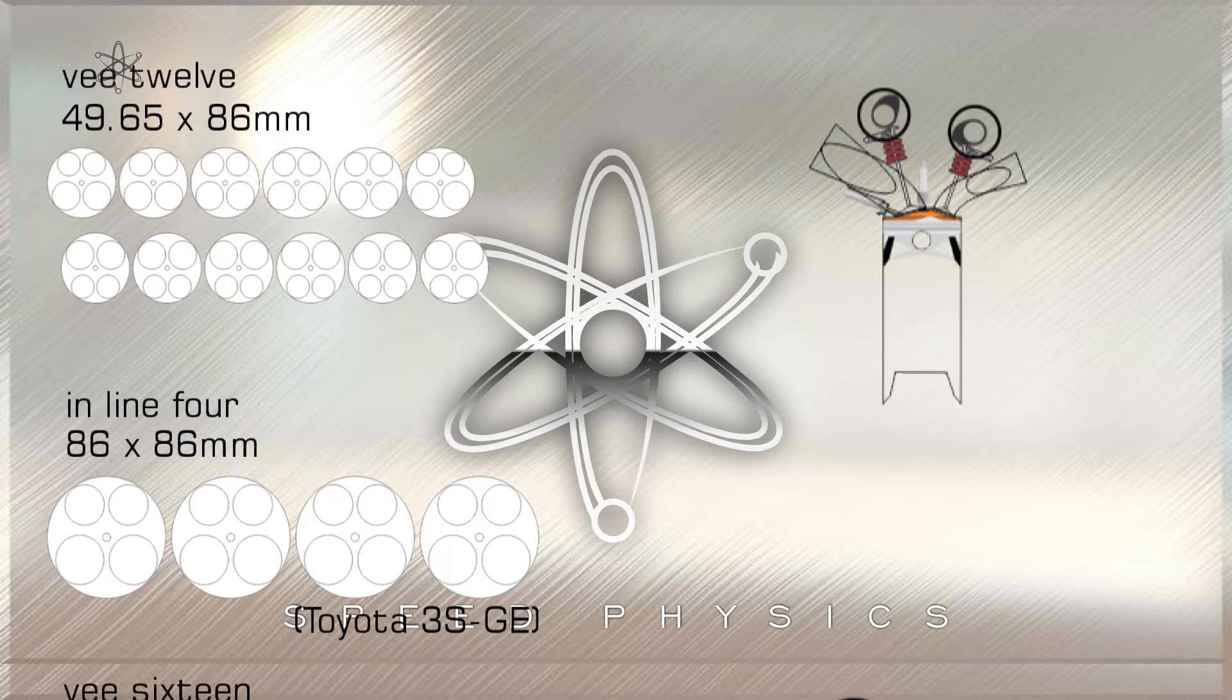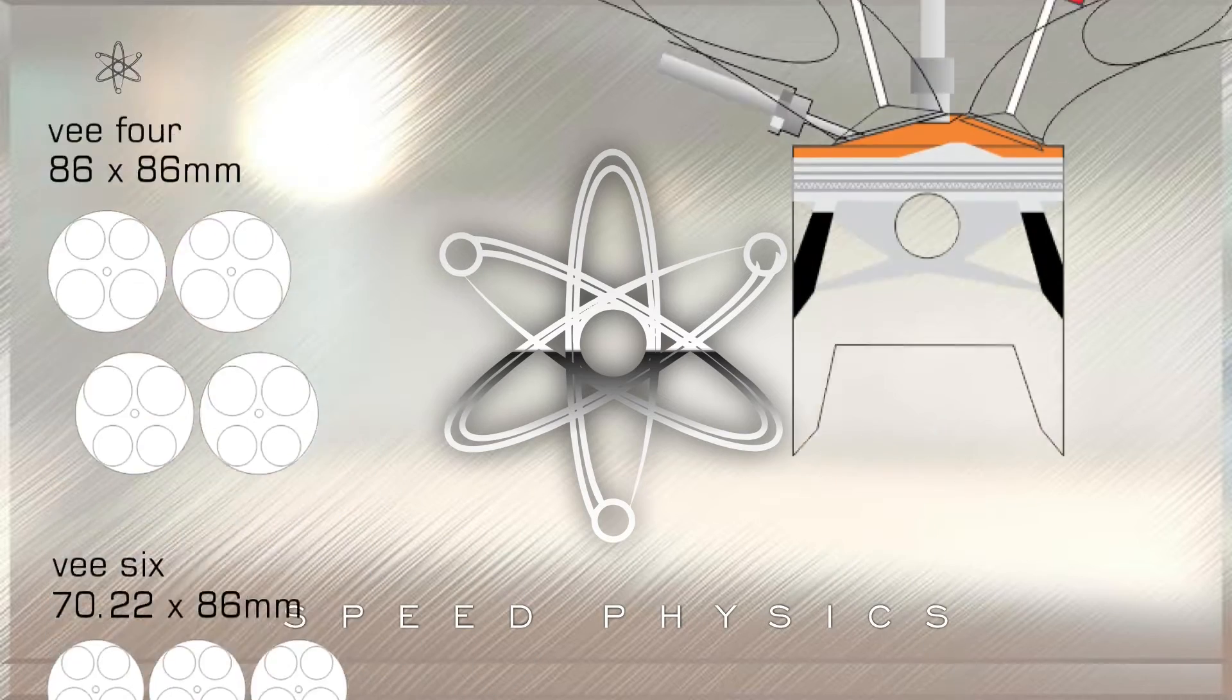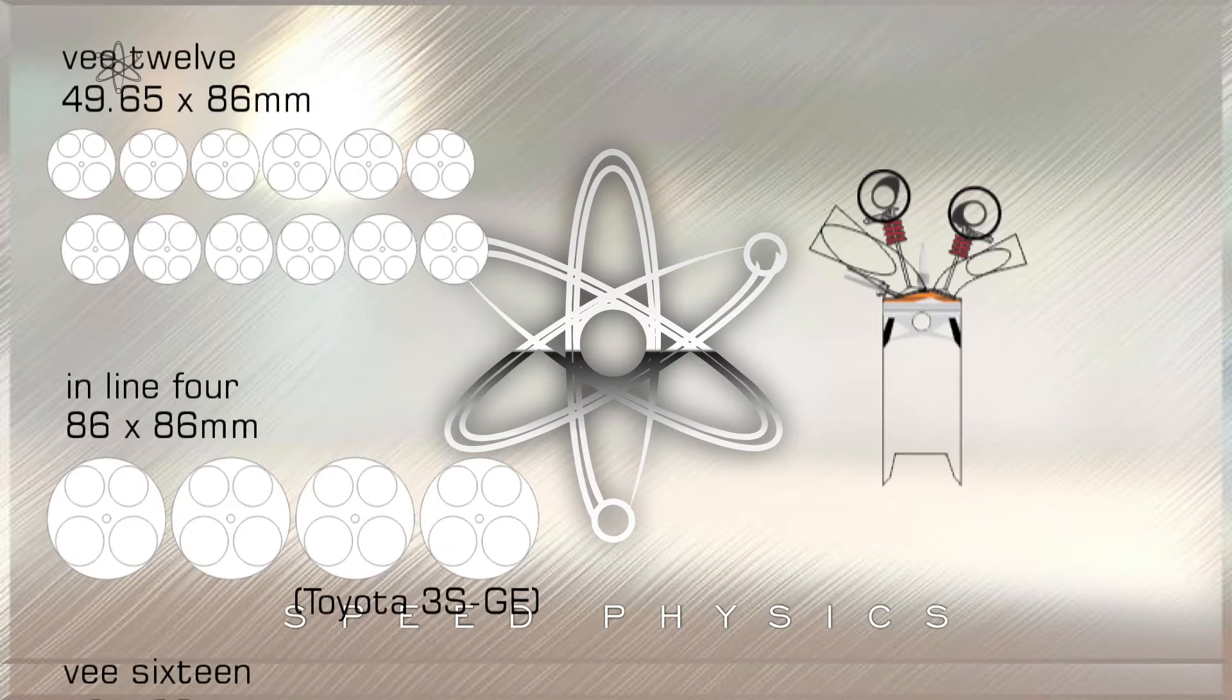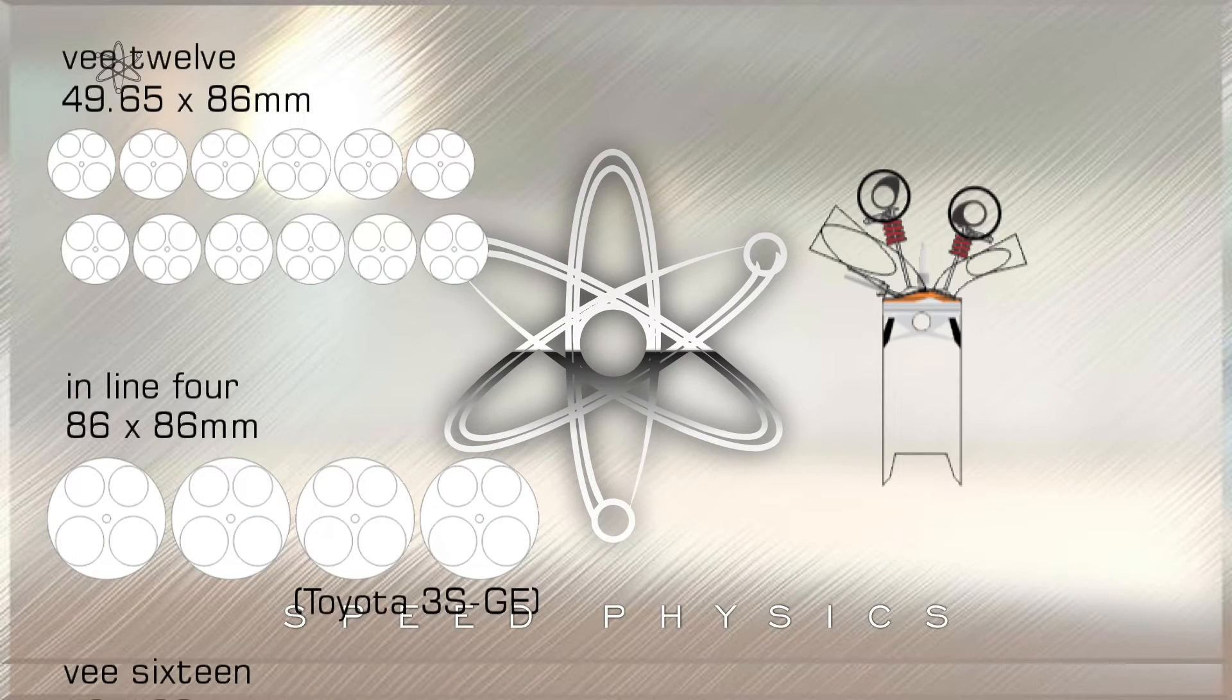Interestingly the bore stroke ratio would be exactly 2 to 1 for the single cylinder not so far off Ducati's 1,285cc twin engine mentioned earlier. This would mean it would have similar operating speeds as a 3SGE engine even though it is double in being over square while on the other end a 12 cylinder variant with similar operating speed potential would have a bore stroke ratio of 0.57 bore to 1 stroke.